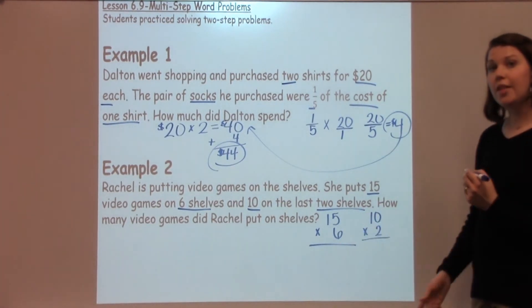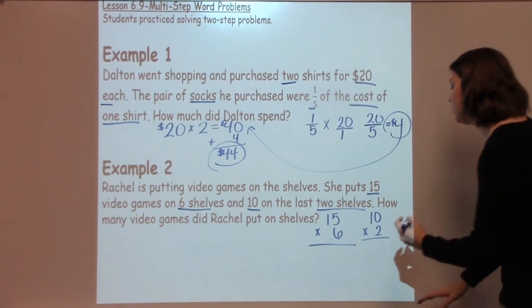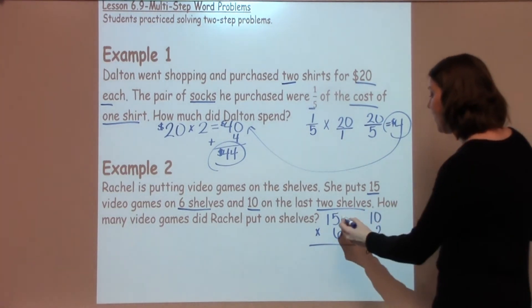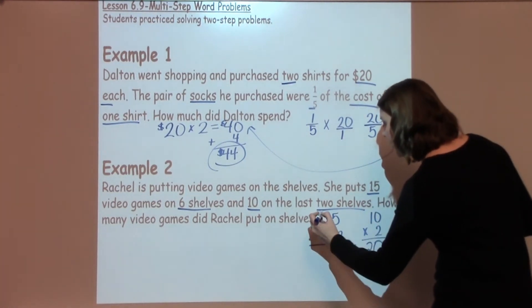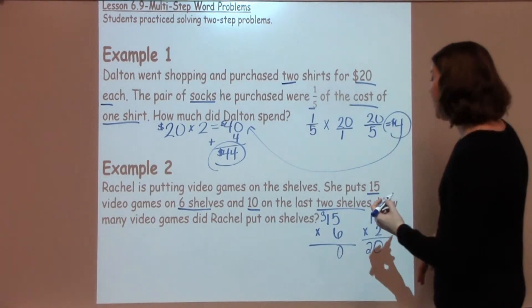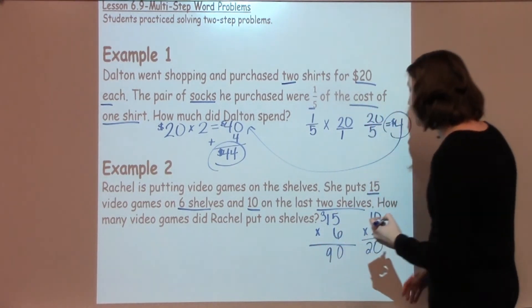Now, very quickly, when I look at this problem, I know that 10 times 2 is 20. 15 times 6 isn't quite as fast, but I know 5 times 6 is going to be 30. I know 1 times 6 is 6 plus 3 more is 9 for an answer of 90.